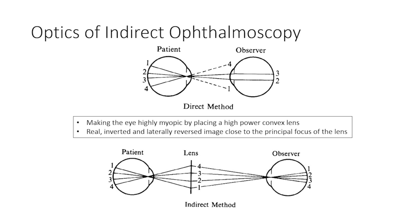There is a whole chapter on optics of ophthalmoscopy in most textbooks, and I would like to refer to the fine chapter in Duane's ophthalmology for further reading. However, I would like to stress on two important aspects of optics related to indirect ophthalmoscopy. The first and most striking feature is the use of a high power convex condensing lens which makes the eye highly myopic, resulting in a real, inverted, and laterally reversed image close to the principal focus of the lens.